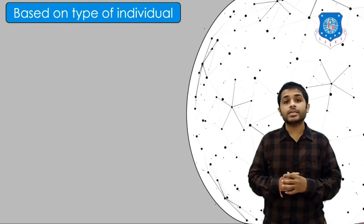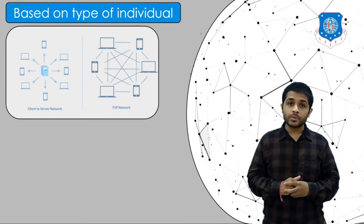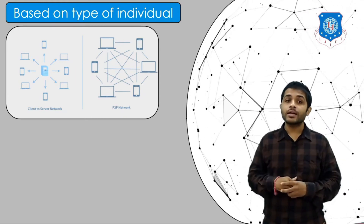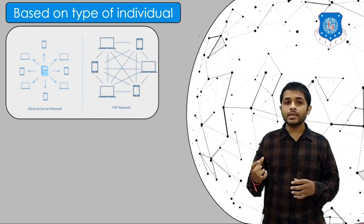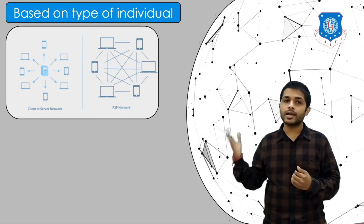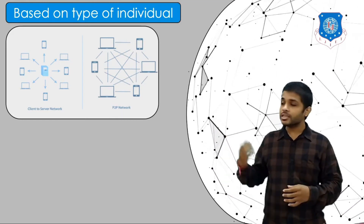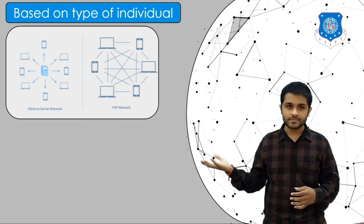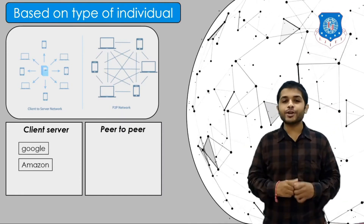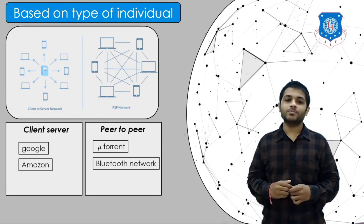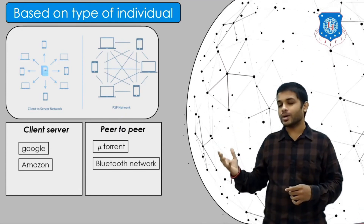Based on the type of individual device, there are two types: client-server network and peer-to-peer network. In a client-server network, one device acts as a service requester, called the client, and one device acts as a service provider, called the server. When a client wants to receive data, it requests the server. In a peer-to-peer network, there is no client-server model — each device can both receive and provide data. Examples of client-server are Google or Amazon; examples of peer-to-peer are Bluetooth networks or BitTorrent. When you download a movie from torrent, that movie is also being shared to other users in the background.